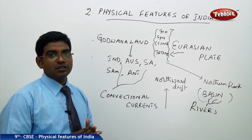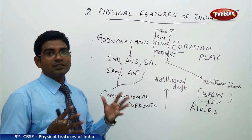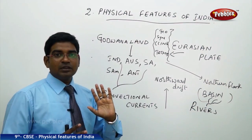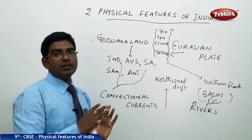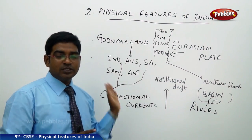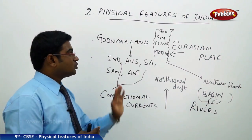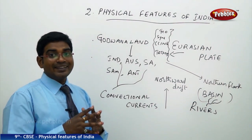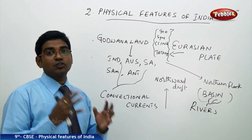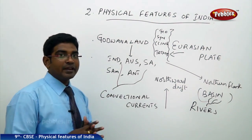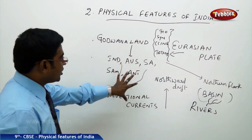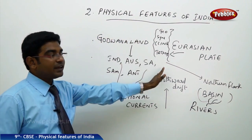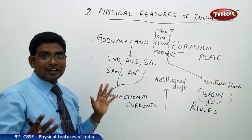On the northern side, we have the Eurasian plate, which comprises the landmasses of present-day Asia and Europe. As the Gondwana land moved northward toward the Eurasian plate, the Tethys sea — the geosyncline situated in the middle between the two plates — began to get pressurized and compressed by this movement.